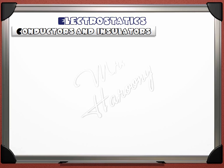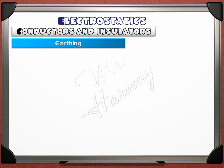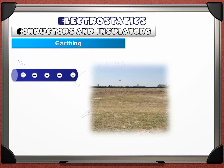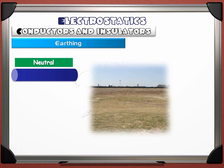An important thing to discuss is the most popular discharging method: earthing. Earth is considered to be a large reservoir of charges. A positively charged body considers the earth a negative body, and a negatively charged body considers the earth a positive body. If we have a negatively charged rod — meaning it has extra electrons — and we connect it to the earth using a wire or by direct contact, the extra electrons will escape to earth, leaving the rod electrically neutral.